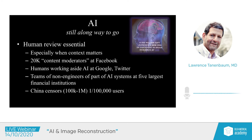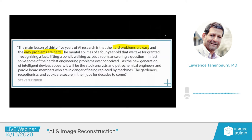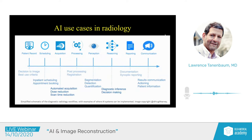Hard problems like beating the world champion at Go are pretty easy for computers — looking at reams of data, looking for patterns. But things associated with easy problems — walking across a room, picking up a pencil, recognizing mom — those are hard. That's kind of where we are today. The rest of our time we'll spend talking about AI and radiology, specifically AI and image reconstruction, looking at how CT dose reduction, contrast dose reduction, and scan time reduction can be impacted by this powerful set of tools.